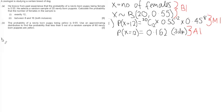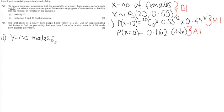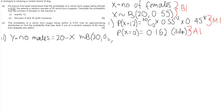Part A(ii) is a little more complicated because we have to find the probability that the number of females is from 8 up to 16. The difficulty is that the probability of success is 0.55, and the binomial tables only go up to 0.5, so we're going to have to use a reverse probability distribution. We let Y be the number of males, where Y = 20 − X. This means Y is distributed binomially with a sample of 20 and probability 1 − 0.55 = 0.45.